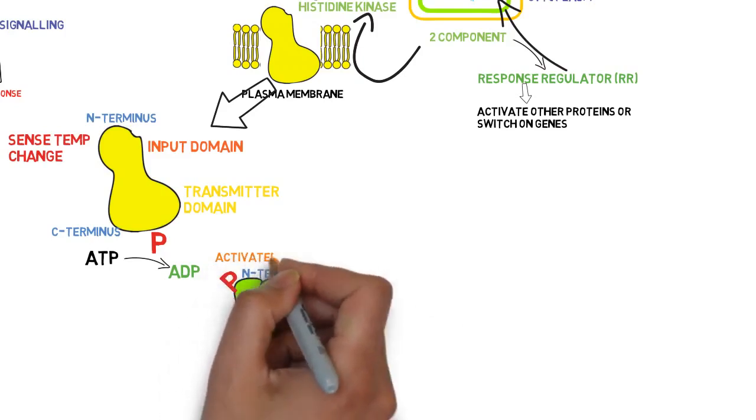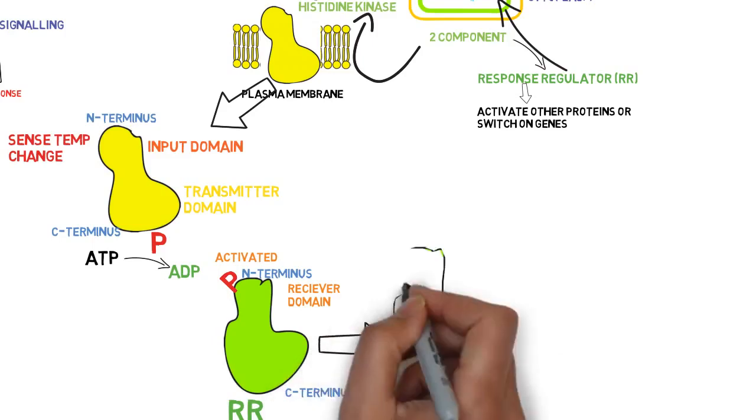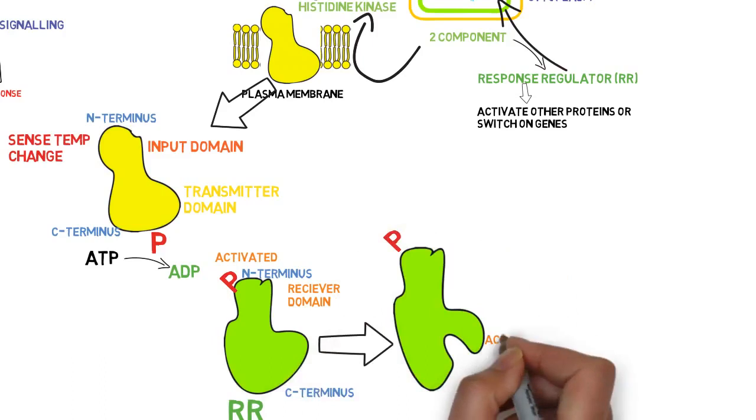Upon phosphorylation, the response regulator is also activated and conformational changes take place at its C-terminus, which is called the output domain.